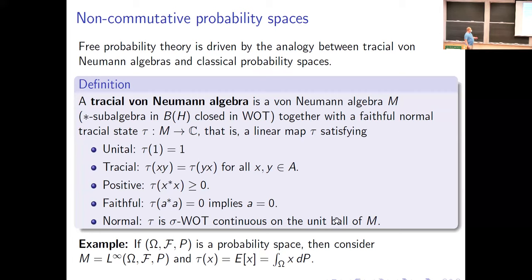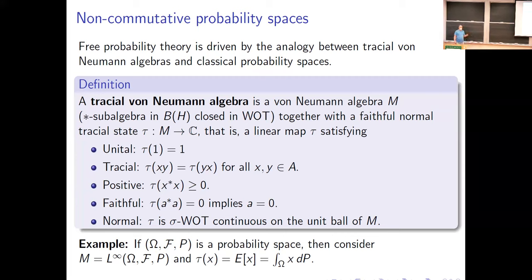When you have a probability space and you take the L-infinity of that probability space, it gives you a motivating example. Commutative tracial von Neumann algebras, if they're separable, will all have this form. You can view the expectation as an example of a trace, and so in the general setting, the trace on the von Neumann algebra is an analog of the expectation. The elements of the von Neumann algebra are analogs of L-infinity random variables in a non-commutative sense, and the trace is the expectation.